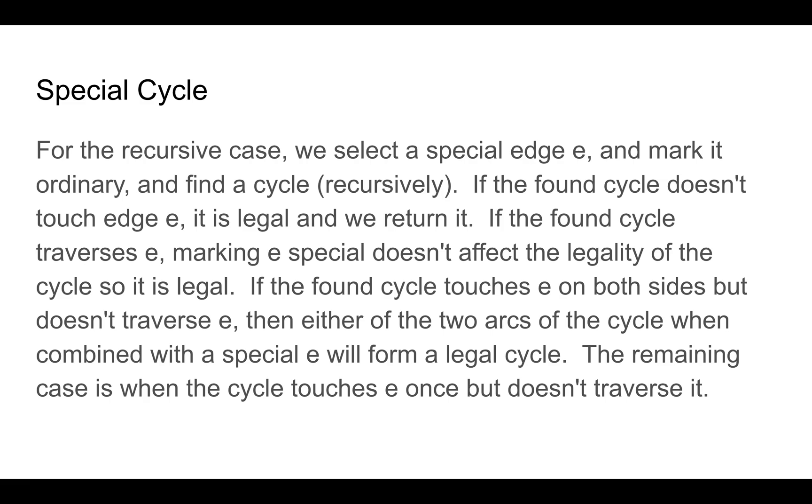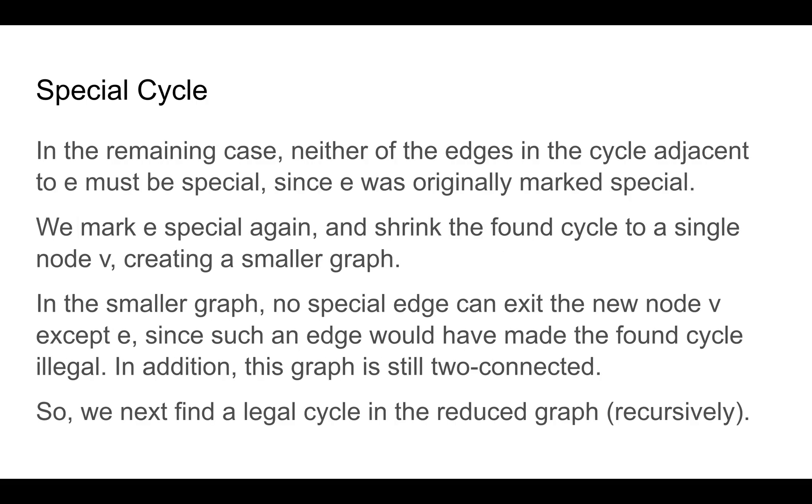The remaining case is if the cycle touches e once but doesn't traverse it. In this case, neither of the edges of the cycle adjacent to e can be special since e was originally marked as special. So what we do is we mark e special again.